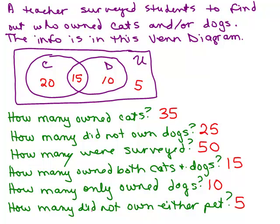Here's a question I didn't ask: how many owned only cats? The people that only owned cats would be 20 — people who had a cat but did not own a dog. That's what it means when I say only cats.